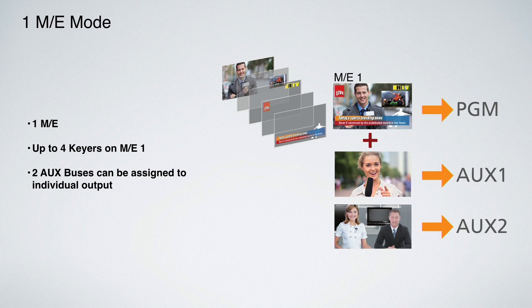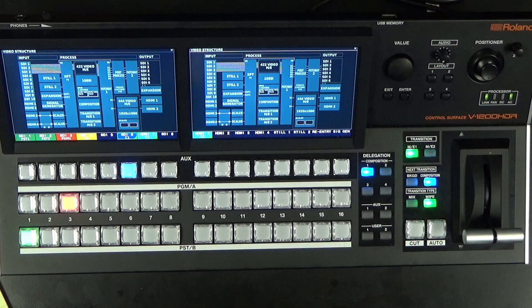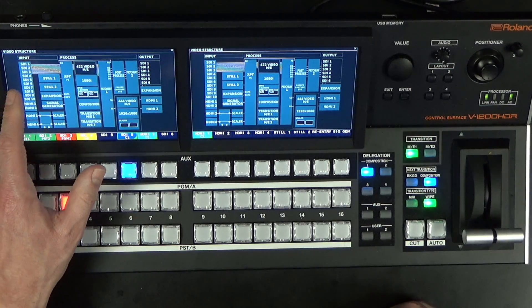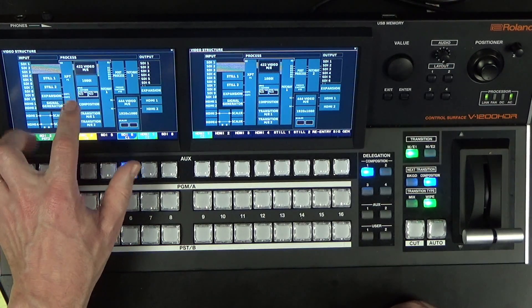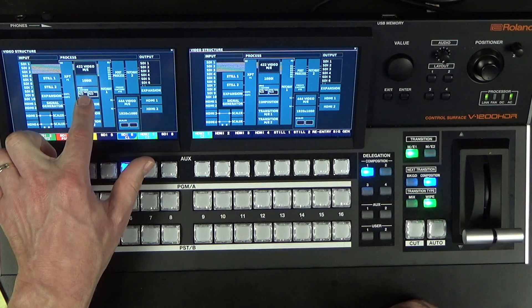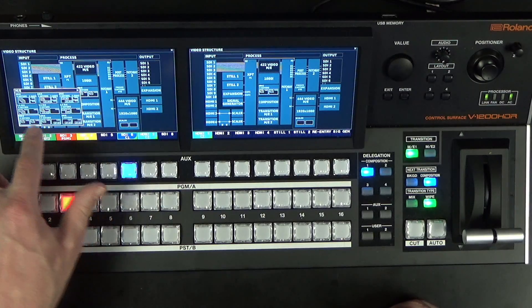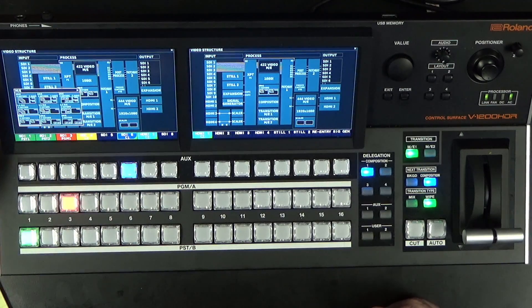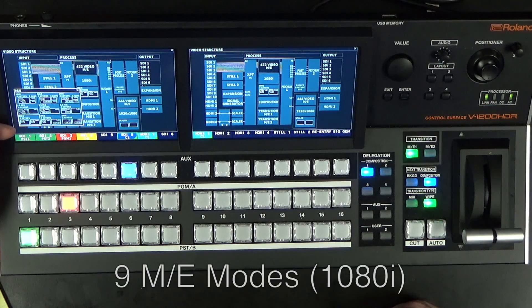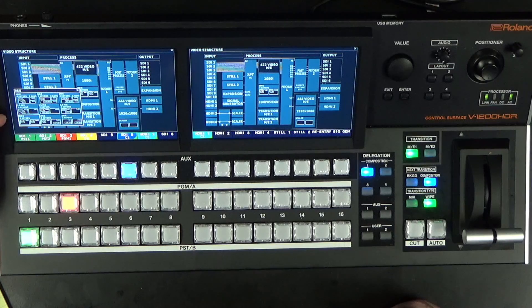Now let's show you how to set up your ME modes. In the video layer button, go to your ME mode section. As you can see, there are nine different ME modes. The first line is 1ME mode, the second line is 1.5, and the last line is 2ME mode.